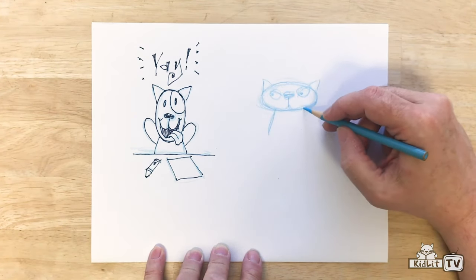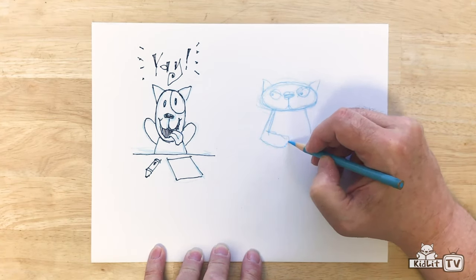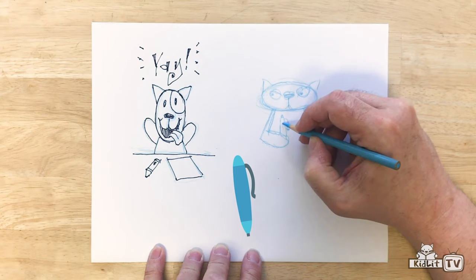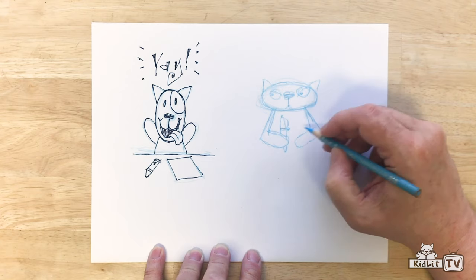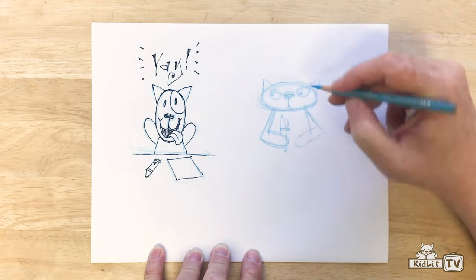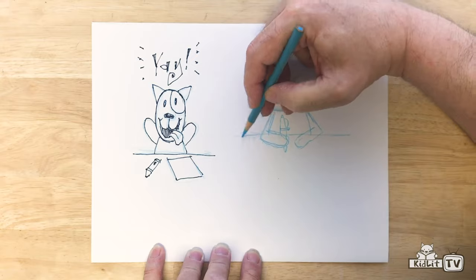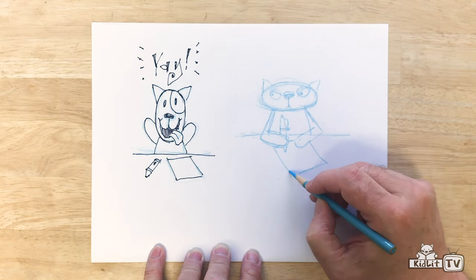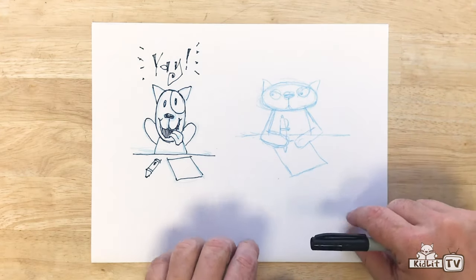But he also writes at a desk. And he uses, unlike Baxter who uses a red crayon, Simon uses a fancy ballpoint pen. And let's see. Where's his desk? His desk will be right here. And he has to have a piece of paper that he's writing on. And he usually writes on personalized stationery that says Simon at the top. We're not going to get it in this illustration but just so you know.